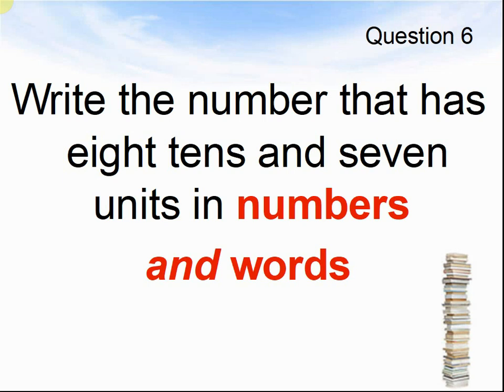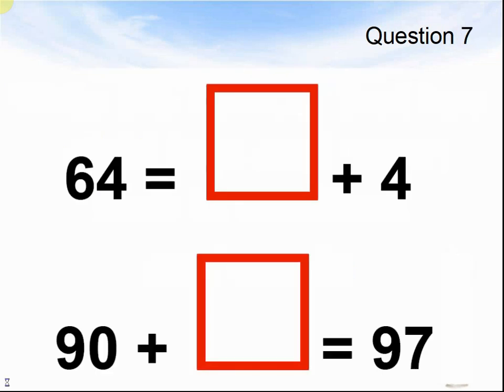Here comes question 7. 64 equals something plus 4. 90 plus something equals 97. Pause the video until you are ready for question 8.